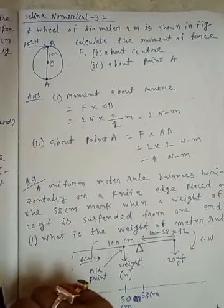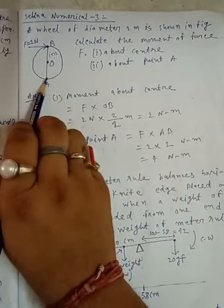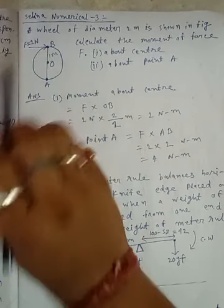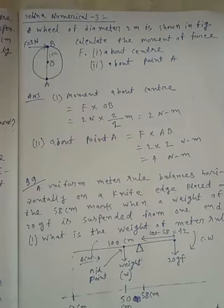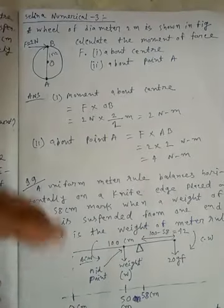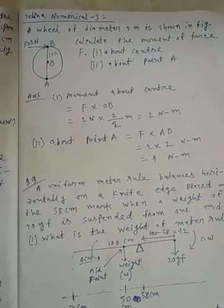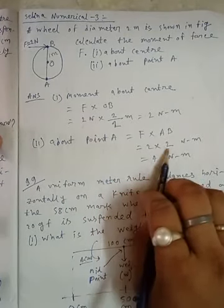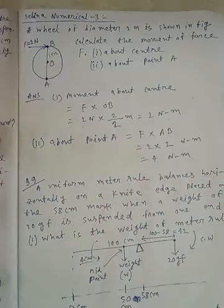Now, about point A. F multiplied by the distance between pivoted point and force. That distance will be AB. So force multiplied by AB will be 2 multiplied by 2, equals 4 Newton-meter.